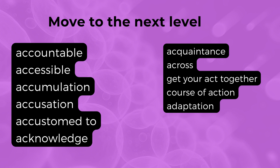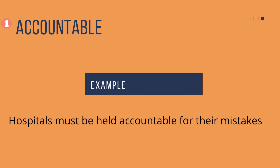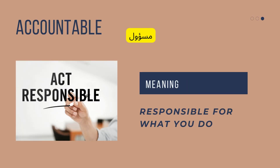Now we will see the meaning, one example, and the Arabic translation of each word. The first word is accountable. Here is an example: hospitals must be held accountable for their mistakes. It means when hospitals make mistakes they have to pay for that — they have to be responsible. So accountable means responsible for what you do.